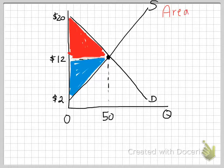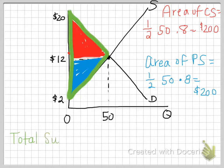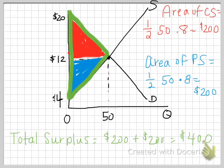The area of consumer surplus is shaded in red. It's one-half the base, which is 50, times the height, 20 minus 12, which is 8. So one-half times 50 times 8 equals $200. We know the producer surplus on this market graph will also be $200 — let's verify: one-half the base of 50 times the height of 12 minus 4, which is 8, gives one-half times 50 times 8 equals $200. The total surplus, which is consumer surplus plus producer surplus, is $200 plus $200, so total surplus equals $400. You will be receiving more practice exercises, and expect to see this on the AP test as well as your next unit test.